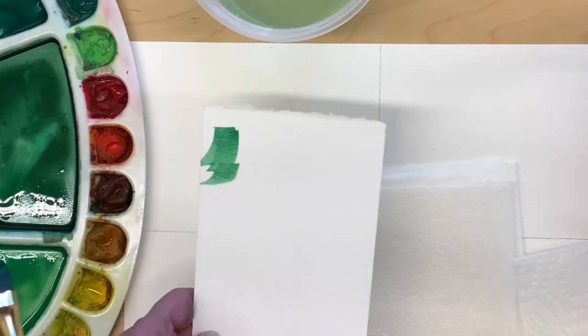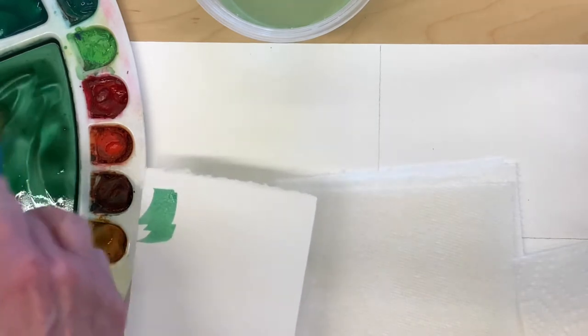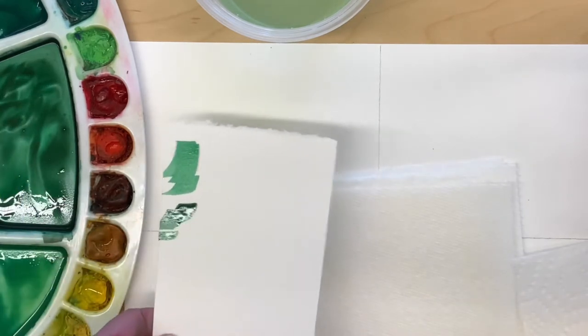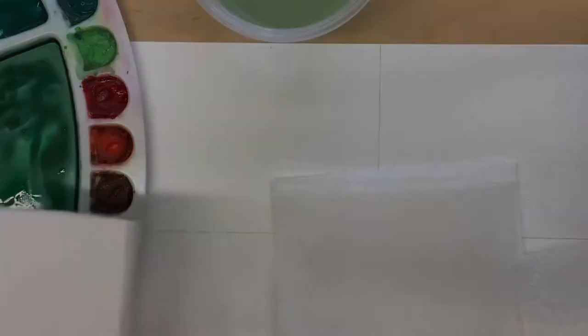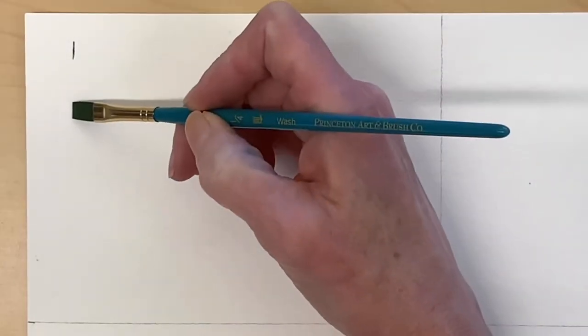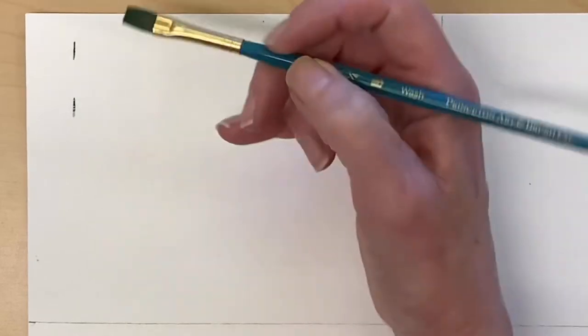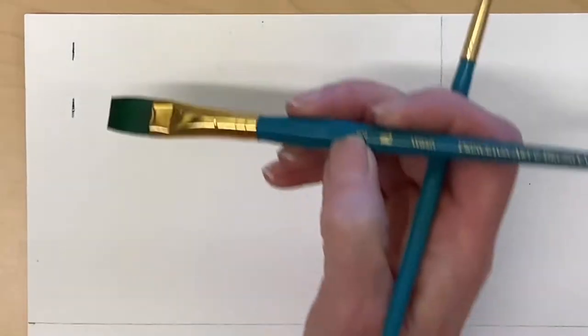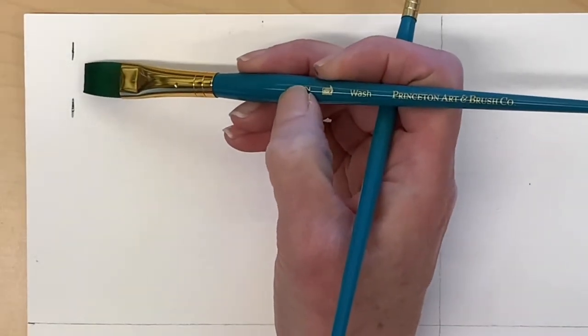I've mixed up two different greens, a brighter green and then a darker, more muted green. Using the darker green and my quarter inch flat, I'm making some marks on my paper. They're about a half an inch apart, and they will be the top and bottom of the tree.